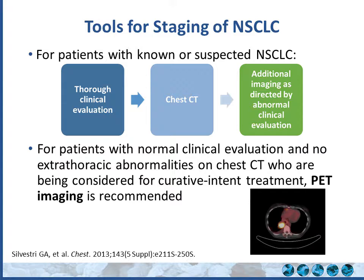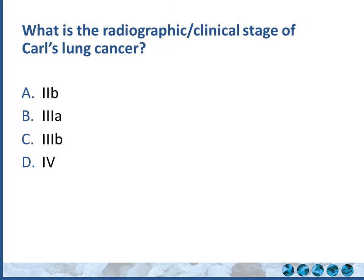When you see a patient like Carl, how do you decide what to do next? You do a thorough clinical evaluation — check for cervical or supraclavicular lymph nodes, look for localized pain suggesting bone metastases. Obviously you'll get a chest CT. Additional imaging like PET is directed by the stage. The 2013 updated lung cancer guidelines recommend that for patients with normal clinical evaluation, no extra-thoracic abnormality on chest CT, who are being considered for curative treatment, PET imaging is recommended.